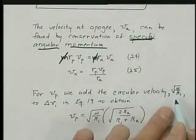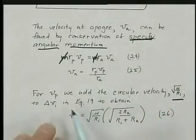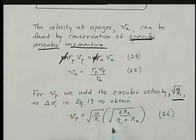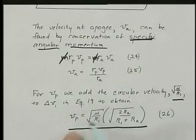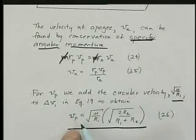For VP, we add the circular speed, the square root of mu over R1, to the delta V1 in equation 19 to get this equation for the velocity at perigee.